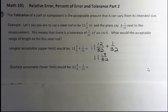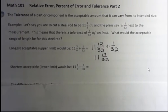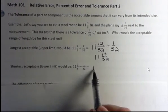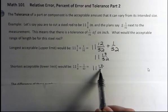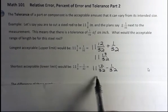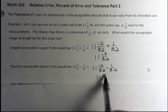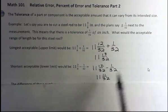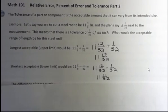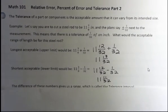So the other one is, what's the shortest acceptable lower limit? I'm going to do the same thing except I'm going to subtract the 1/32nd. So I'm going to make that 11 and 12/32nds, and then subtract 1/32nd, and that's going to give me 11 and 11/32nds. So my upper limit is 13/32nds, my lower limit is 11/32nds, the whole number 11 is staying the same there.